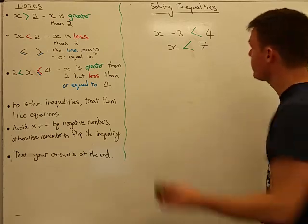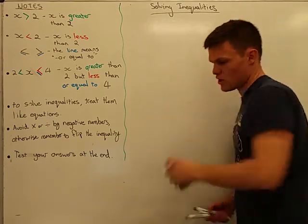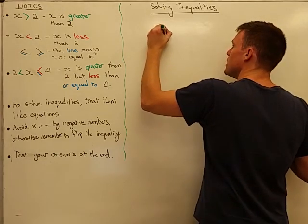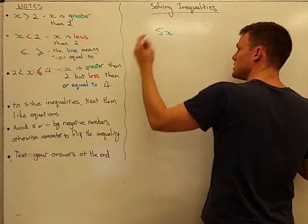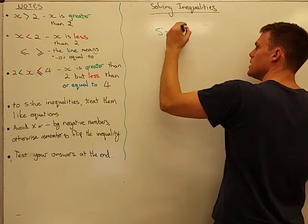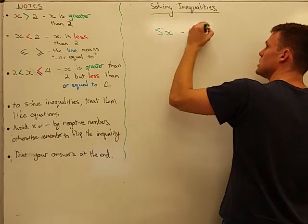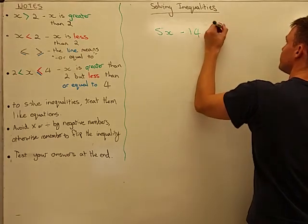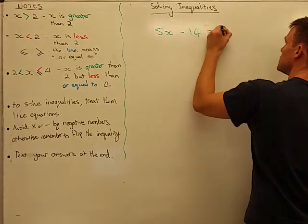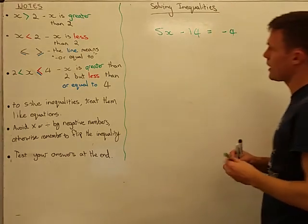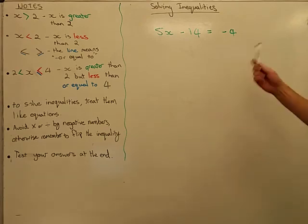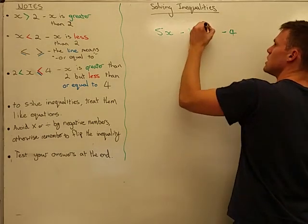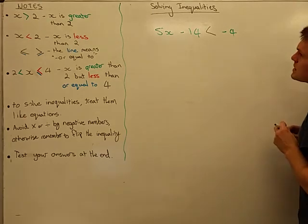Cool, so if you can do that, we can solve a little bit more of a complicated equation. Let's say something like 5x minus 14, and this time instead of equals, let's say it is less than negative 4.